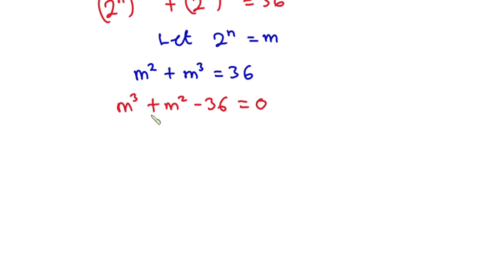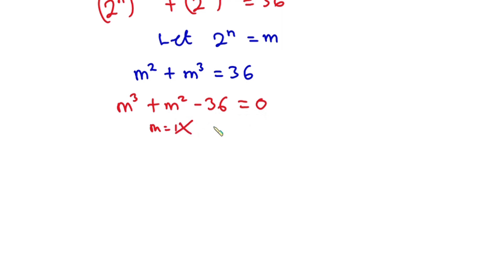To solve this cubic equation, we first find one of its roots. Let's test m equals 1: we get 1 plus 1 minus 36, which is not zero. Let's test m equals 2: we get 8 plus 4 which is 12, and this will never equal zero, so m equals 2 doesn't work either.